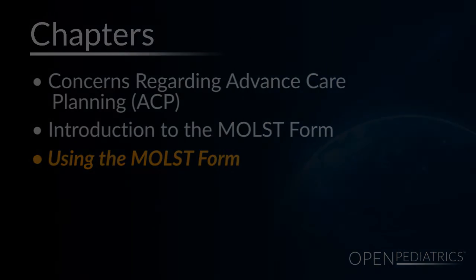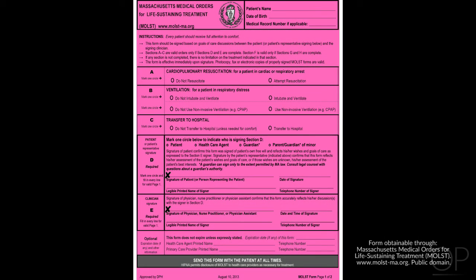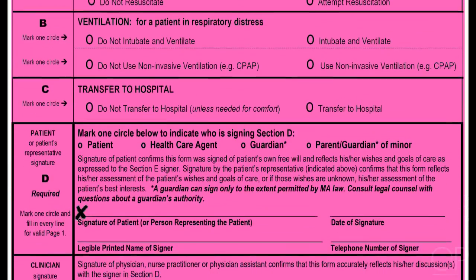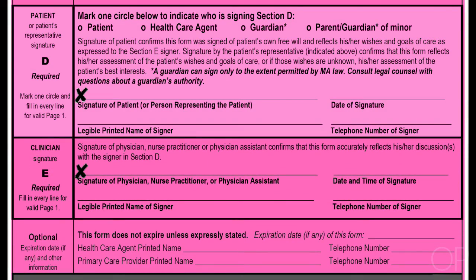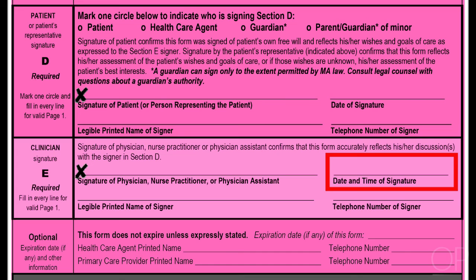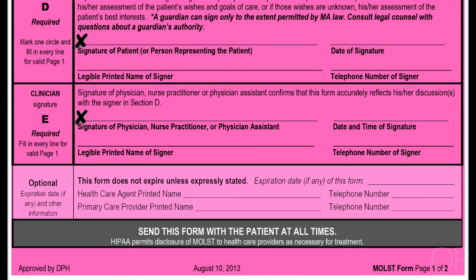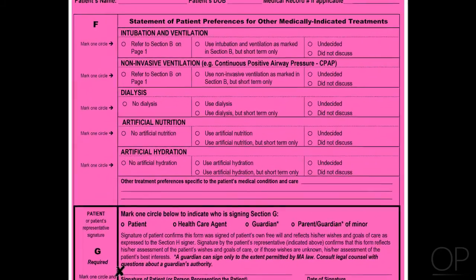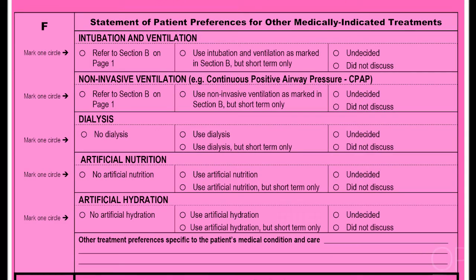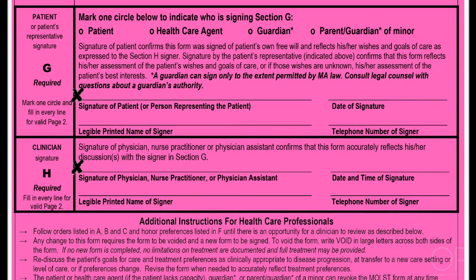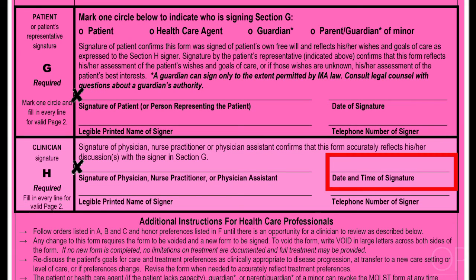Now we're going to talk about some of the specifics of filling out a MOLST form. On page 1, fill in sections A, B, and C to reflect treatment preferences. Then instruct the patient or patient representative to fill in section D completely. Fill in section E yourself. It is important to not only fill in the date you signed the form, but also to document the time. All medical orders must be dated and timed. Fill in optional information as instructed at the bottom of page 1, if appropriate for the patient. For section F on page 2, explain the uses, benefits, and burdens of each treatment and mark the treatment preferences, or mark undecided or did not discuss. Instruct the patient or patient representative to fill in section G completely, and fill in section H yourself. Don't forget to document the date and time that the form is signed.